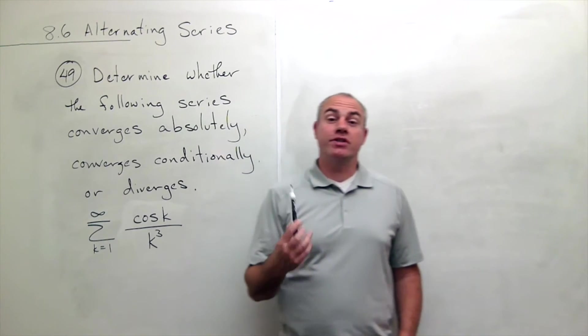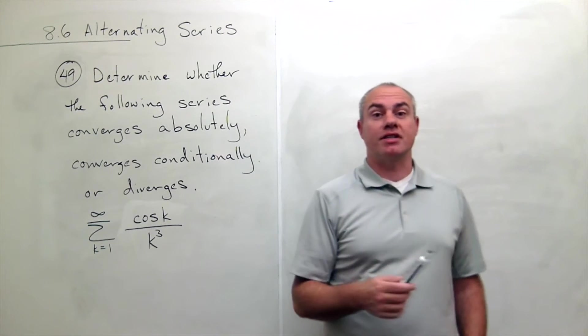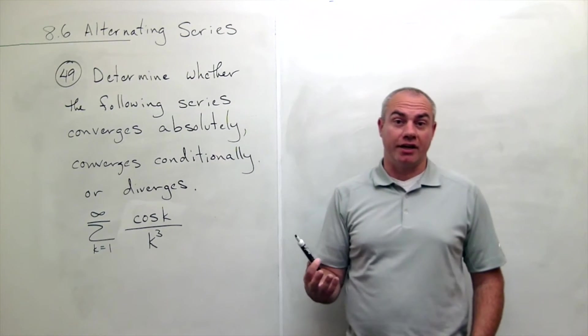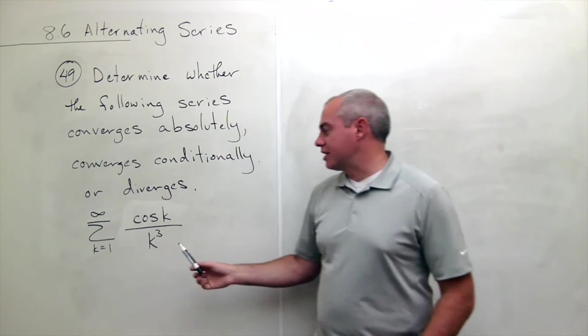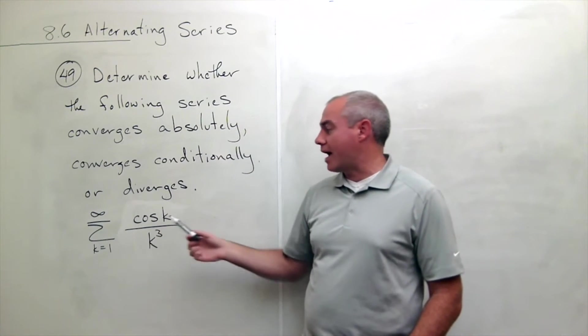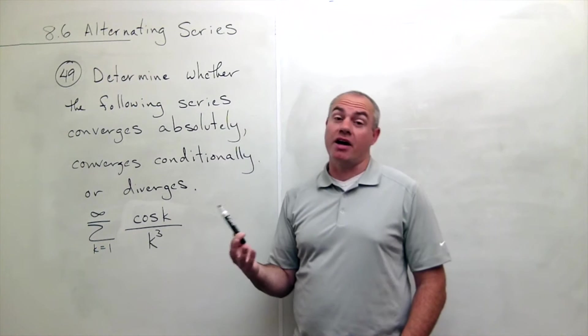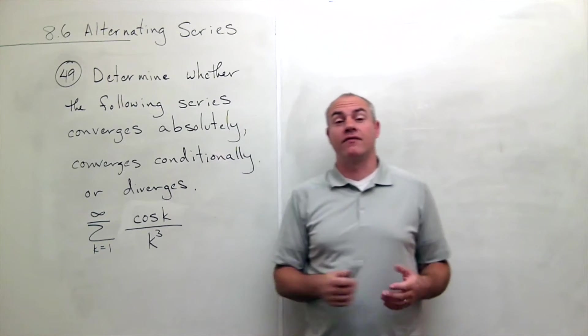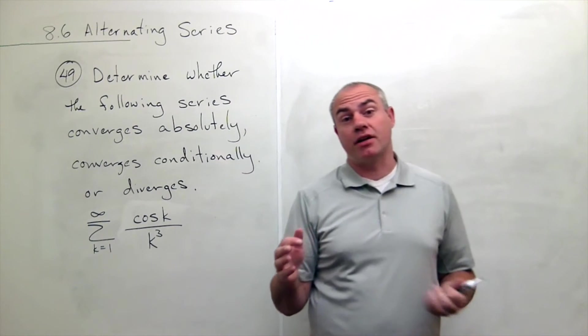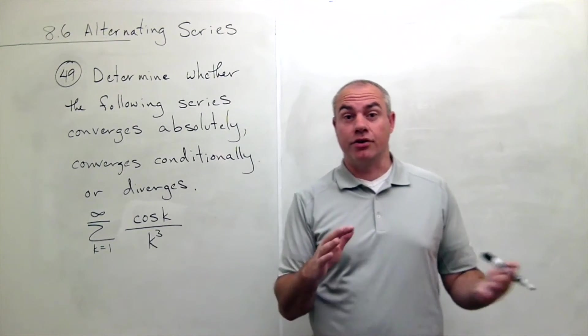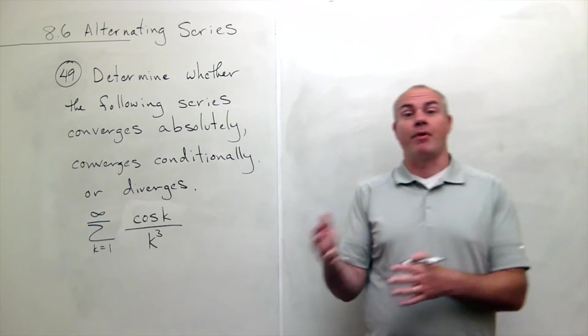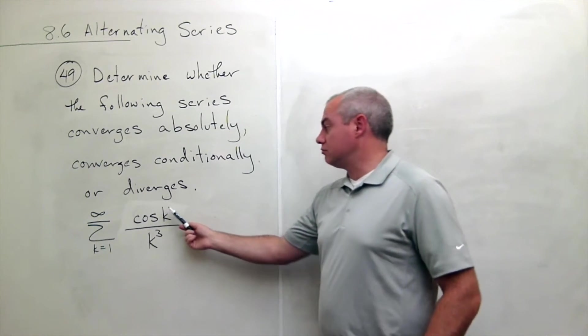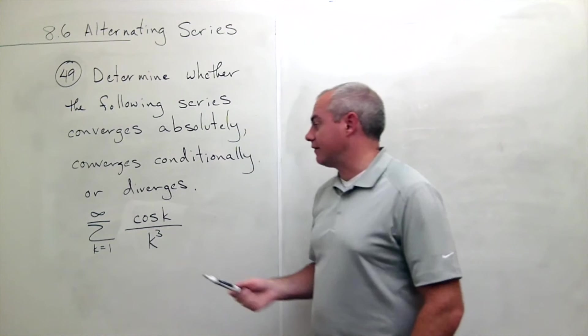The first thing we typically check out in this type of problem is does it converge absolutely? If I make all of these positive, notice that cosine of k sometimes is a positive number, sometimes it's a negative number. We could investigate, but it's not necessarily even alternating. It could be like a negative, a negative, a positive, a positive, something like this. It's just some random negatives in there.